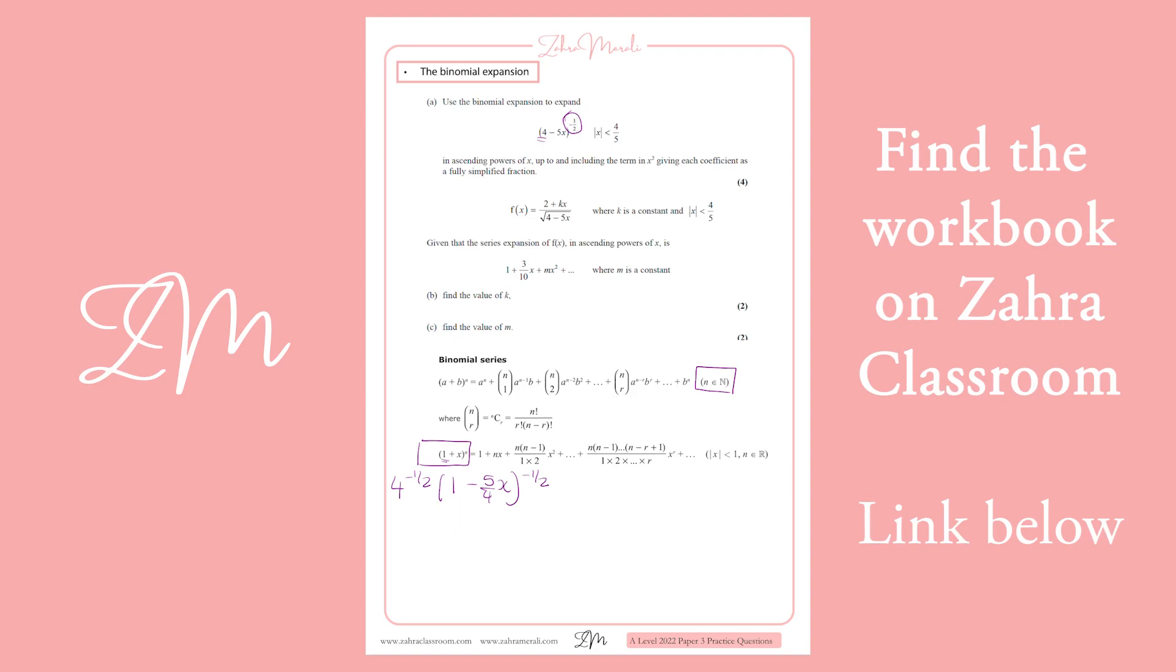And what we're going to now do is we know 4 to the minus a half is 1 over root 4, so a half, and we're going to x squared. So we have our 1, we treat wherever we see an x, we're going to put minus 5 over 4x, and wherever there's an n, we put minus a half.